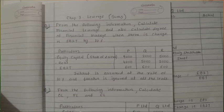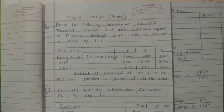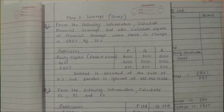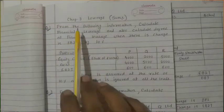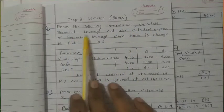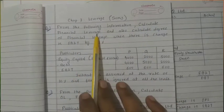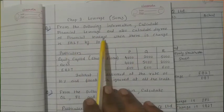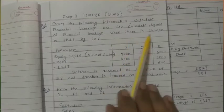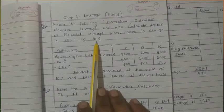Good morning students. Myself Chirak Sukhani from Rockwell BBA College. We will continue our chapter on leverage, and in that there is a combined sum. If you ask what type of sum, let's go. Question number one: From the following information, calculate financial leverage, and also calculate the degree of financial leverage when there is a change in EBIT by 10%.